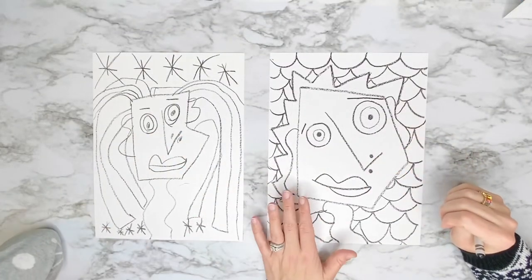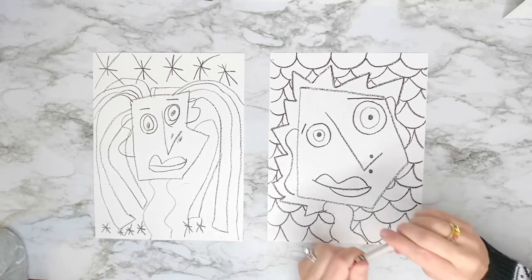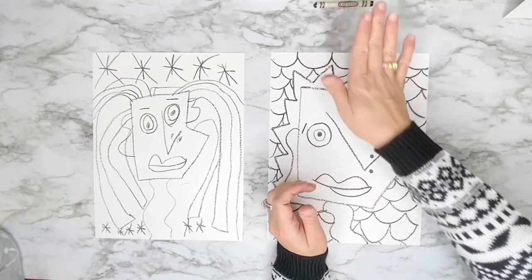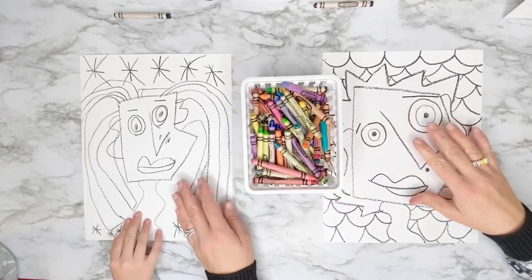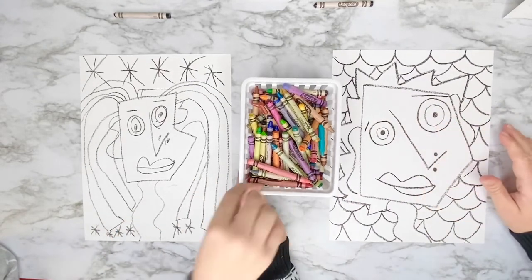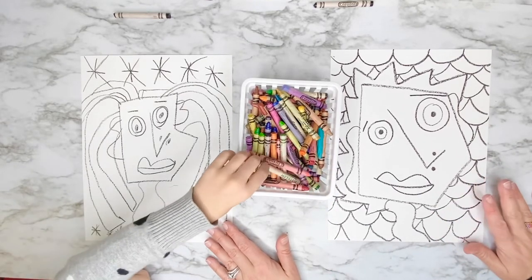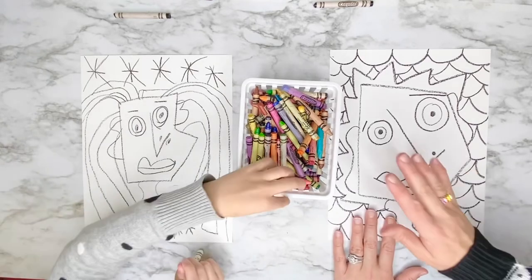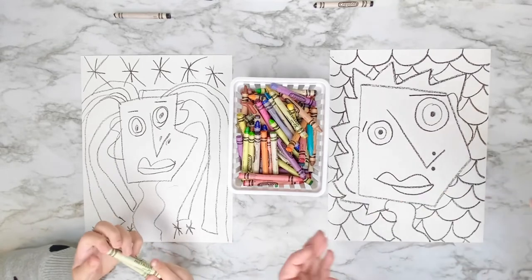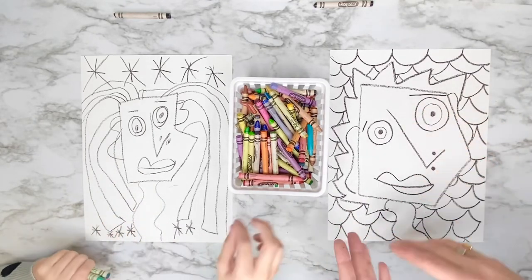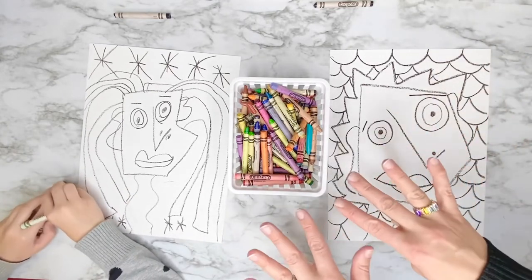We're done adding our background details. And I really love the details you added to your hair. That was a good choice. We're going to take our black crayons and set them aside because we don't need them anymore. And now we are going to color our entire paper. Now when you're coloring, you want to use abstract colors. So colors that aren't realistic. So it's okay if your eyes have different colors. It's okay if your hair is a crazy color. It's okay if your skin isn't a skin color like purple. You can do whatever you want here.